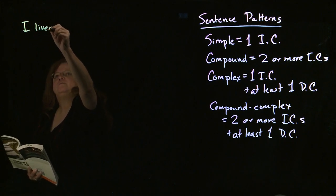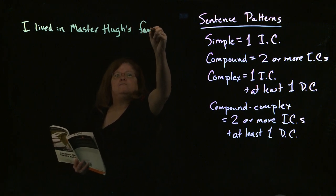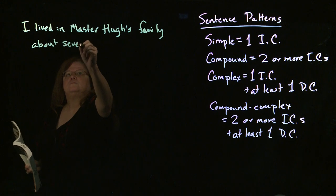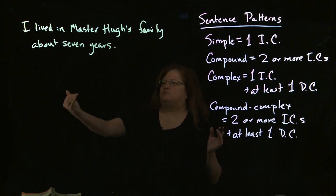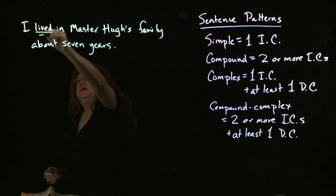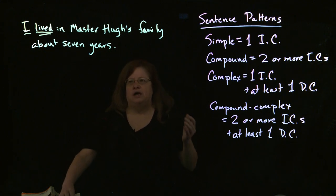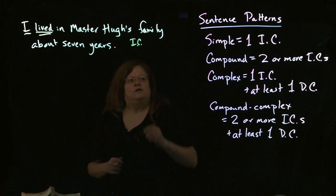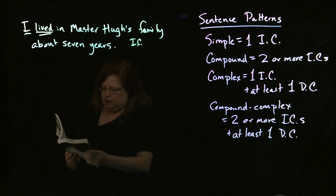For example: 'I lived in Master Hugh's family about seven years.' We want to go back and look at finding subjects and verbs. We see we have the verb 'lived' and the subject 'I.' If we look through the whole rest of this sentence, we see that we don't have any other clauses — this is the only clause. It is, of course, an independent clause because it stands alone as a sentence. So if we look at our formulas, we see we have one independent clause.